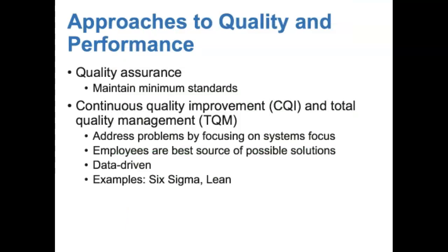Quality assurance requires using the minimum acceptable requirements for processes and standards for outputs as the criteria for taking corrective action. Quality assurance can be an important component of ensuring that program interventions are delivered as planned and according to standards. When a quality assurance team finds errors, they can work to bring processes back into compliance. One method for doing this is called continuous quality improvement, CQI. CQI was adopted in the 1990s by healthcare organizations as a way to reduce costs and improve the quality of services. It addresses problems by focusing on systems, and it recognizes that employees are sometimes the best resources for potential solutions.